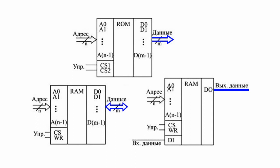Data — outgoing outputs that form the memory data bus. The code on data lines is represented by the content of the memory cell which has been addressed at the given moment. In the case of RAM, apart from the outgoing data bus, there may be an incoming data bus to which the code recorded in the selected memory cell is supplied. Another option is the combination of the incoming and outgoing data buses — a bi-directional bus — where the direction of data transmission is set by the control signal.